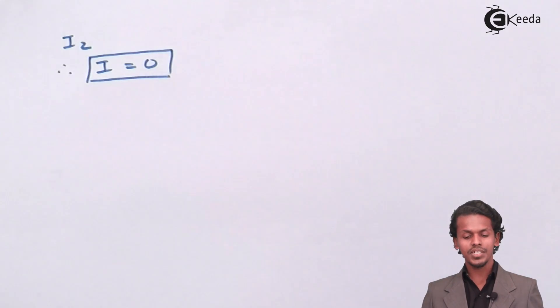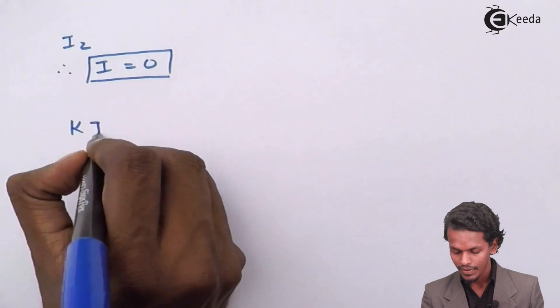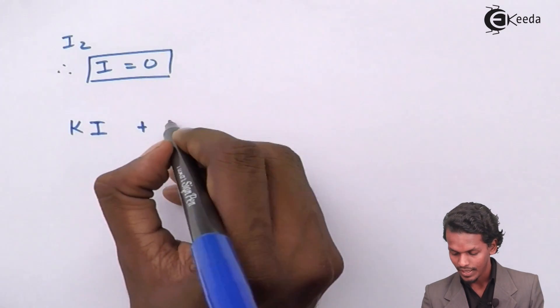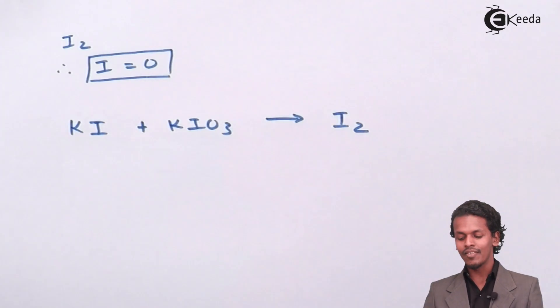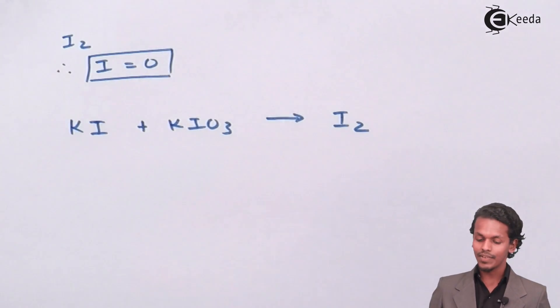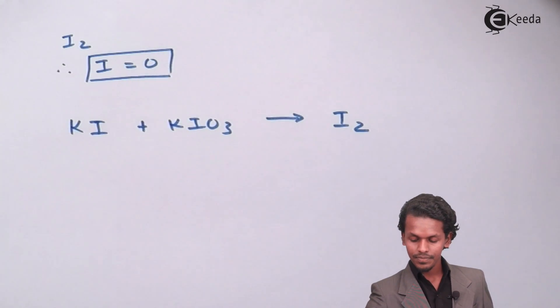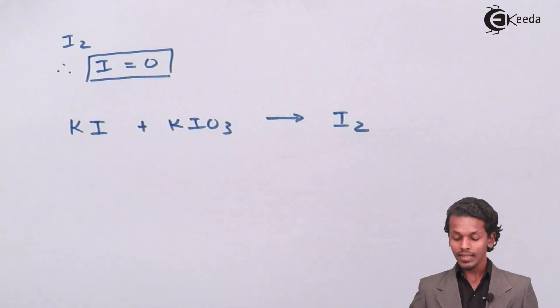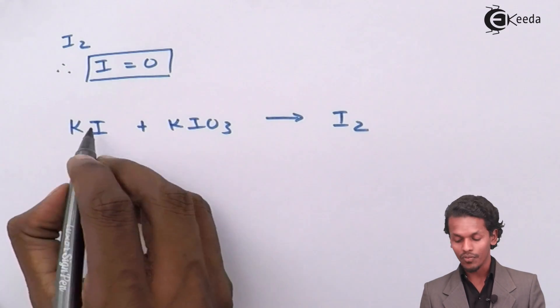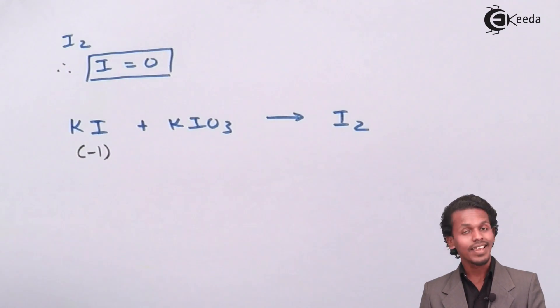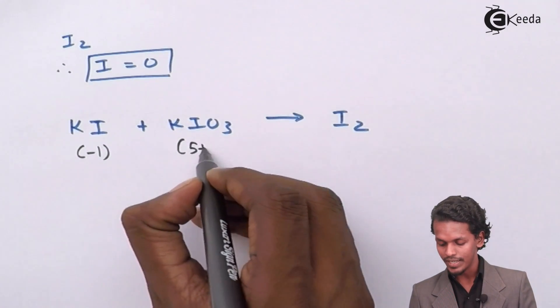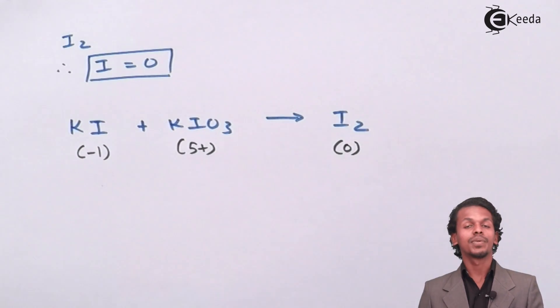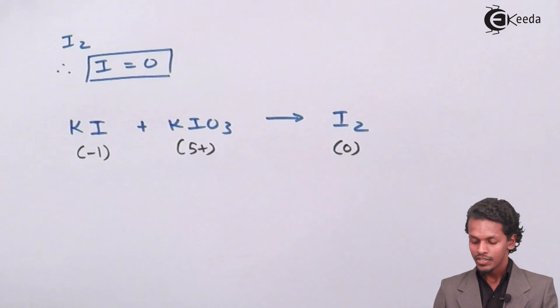So in the whole reaction the oxidation number of iodine changes from KI plus KIO3 and I have written as I2. In this case I have not balanced the overall reaction, I am just giving a glance that iodine which has an oxidation number is being converted into zero.